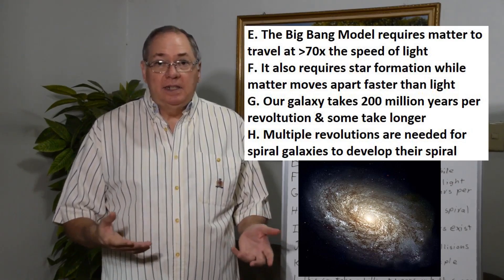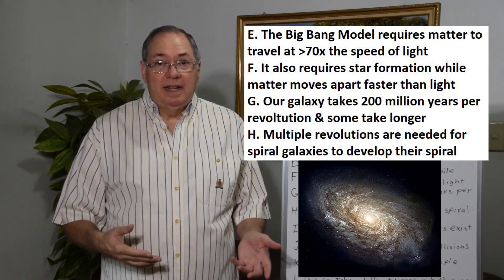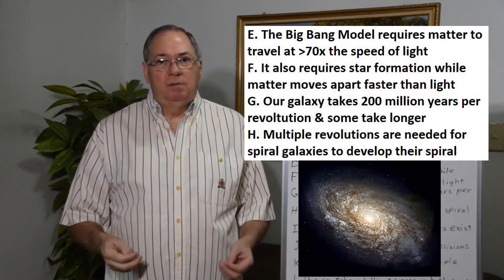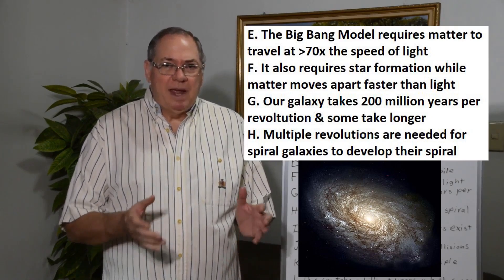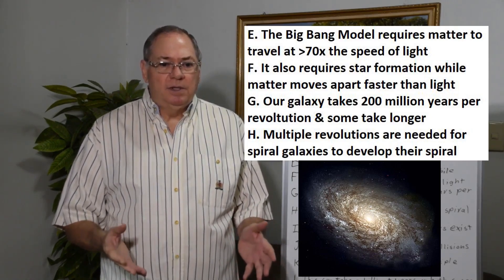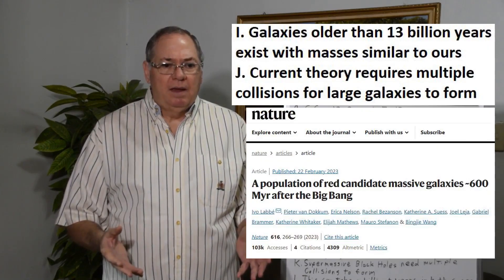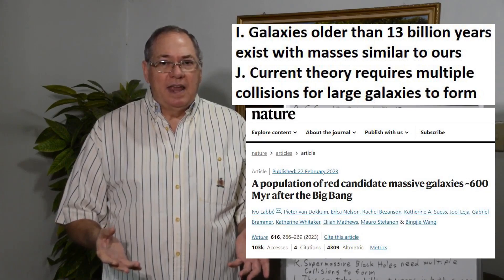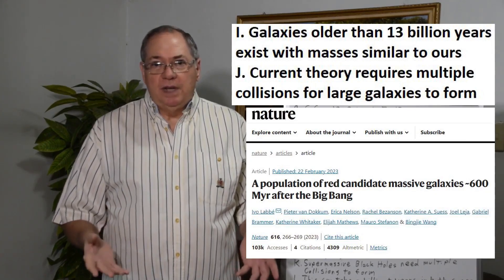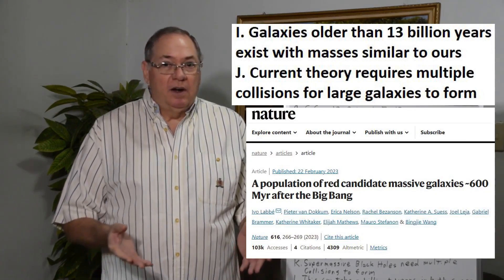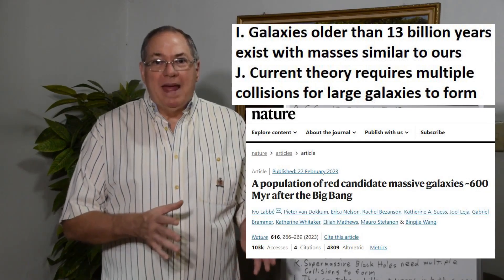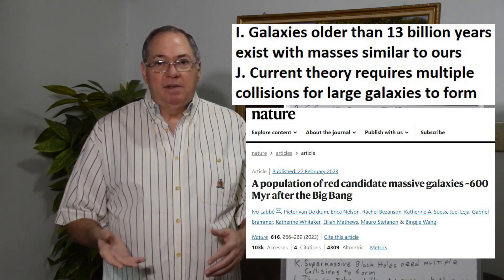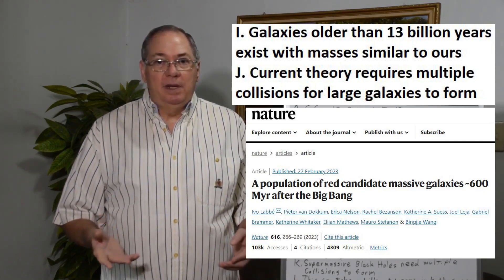Some galaxies can take even longer to rotate — hundreds of millions of years longer — so it could be billions of years for a mature spiral galaxy to form, just the mechanisms needed to produce the spiral. And we've already identified galaxies over 13 billion years old that are roughly the same size and mass as our galaxy — between 10 to the 10th and 10 to the 11th stars, meaning 10 billion to 100 billion stars.